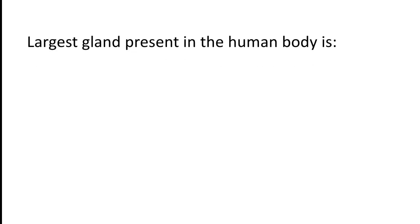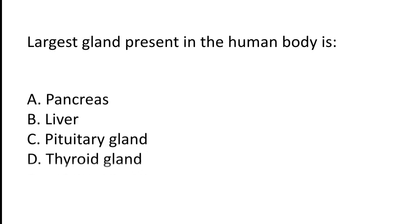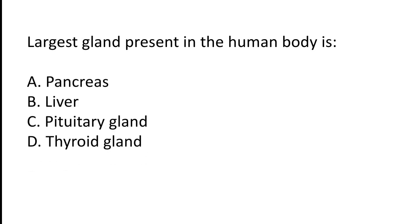The largest gland present in the human body is: A) pancreas, B) liver, C) pituitary gland, D) thyroid gland. The correct answer is option B — the largest gland present in the human body is the liver.